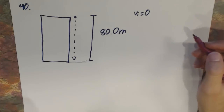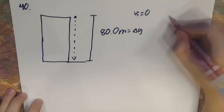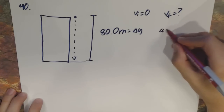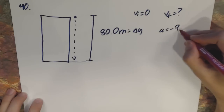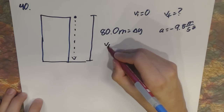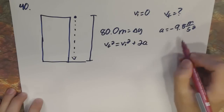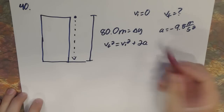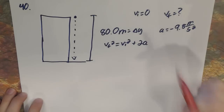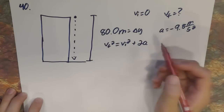To find the final velocity, we know our change in y, we know our initial velocity, and since this is free fall we know the acceleration is negative 9.8 meters per second squared. We want the time-out equation: v-final squared equals v-initial squared plus 2A·delta-y. We use delta-y rather than delta-x because delta-y is used for up and down positions.